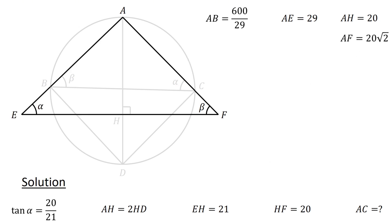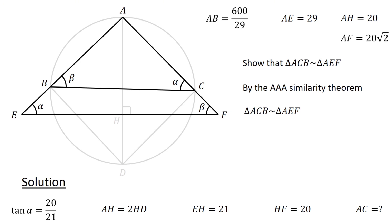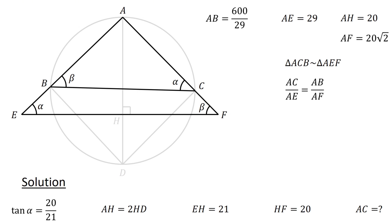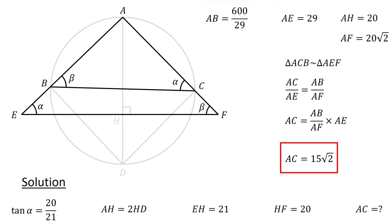Finally, consider triangle AEF and triangle ACB. Let us show that these triangles are similar. Since angle ACB equals angle AEF equals alpha, and angle CBA equals angle EFA equals beta, by the AA similarity theorem, the two triangles are similar. Since corresponding sides in similar triangles are proportional, we have AC over AE equals AB over AF, or AC equals (AB over AF) times AE. Substituting the values, we thus have AC equals (600/29) divided by 20 square root 2, times 29. Simplifying, we therefore obtain AC equals 15 square root 2 units, which is the solution to our problem.